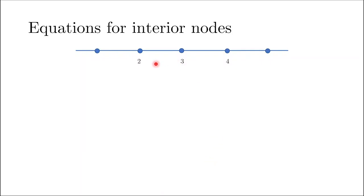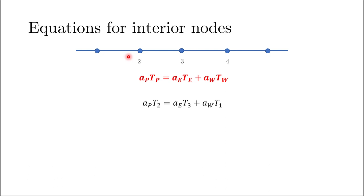That was the treatment for interior grid points — nodes 2, 3, and 4 in our problem. Using this general expression: for node 2 we write a_P·T₂ = a_E·T₃ + a_W·T₁; similarly we can write the equation for node 3 and node 4. We have three equations for five unknowns, so we still need two more equations — that's where we treat the boundary nodes.